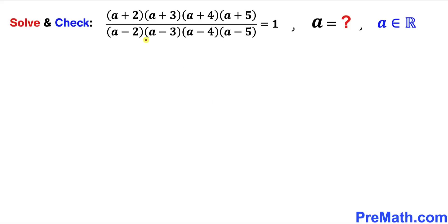In this video we are going to solve this given rational equation: (a+2)(a+3)(a+4)(a+5) all over (a-2)(a-3)(a-4)(a-5) equals 1. We will check our solutions as well, and our variable a is a real number.